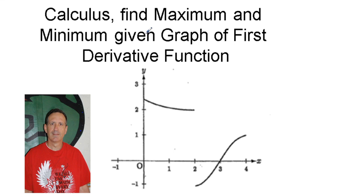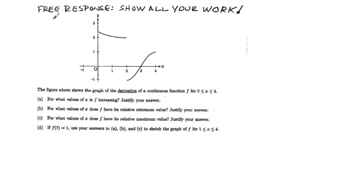Calculus: find maximum and minimum given the graph of the first derivative function. This is a recent problem my students had on a test and didn't do as well as they should have, so this bears some analysis. We have a graph — it's a weird graph, not a polynomial function; we have a broken graph. This figure shows the graph of the derivative of a continuous function f between 0 and 4. I'm going to label this graph here as f prime of x.